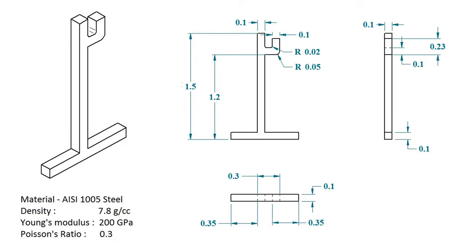We're going to use the dimensions from this schematic. We'll be using SI units, where length is in meters. The stand is a solid block made of steel with a density of 7.8 grams per centimeter cube, a Young's modulus of 200 gigapascals, and a Poisson's ratio of 0.3. When performing finite element simulations, it is not necessary to model every single part of your simulation. Engineers often decide what needs to be part of a simulation and what doesn't in order to save time and computational resources.